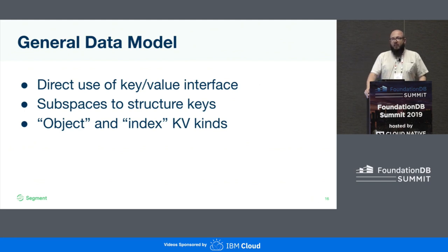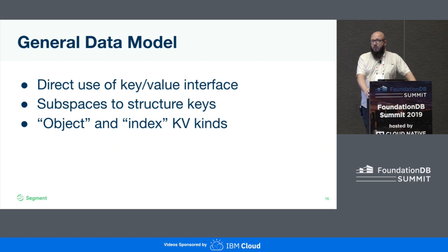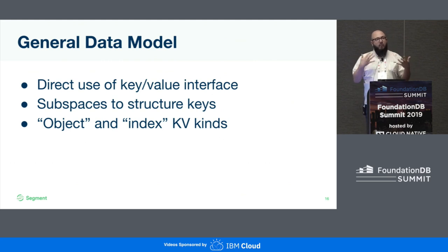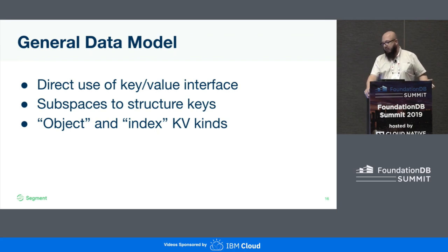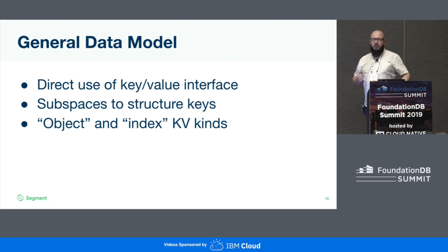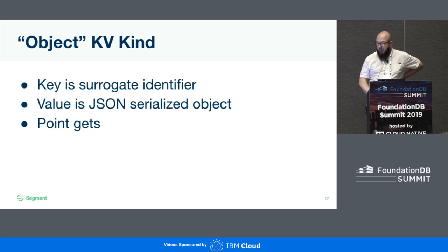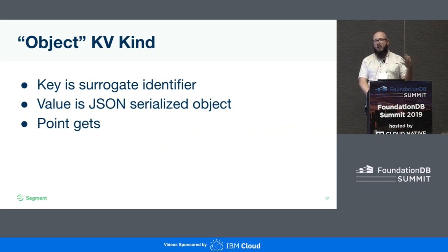Let's talk about what this actually looks like on top of FoundationDB. We don't use any real mapping layer. We decided to go directly to the KV store. Some of that is because all of our services are written in Go, and there isn't a ton of layer implementations for Go. So we directly use the KV interface. We use subspaces to structure our keys, and we have two types of KV pairs: objects, which are basically surrogate IDs as keys mapped to JSON-serialized objects, and indexes, which index those objects based on the fields in them. We do mostly point gets on these object KV types, and the value is a JSON-serialized object. A surrogate key is just a generated key that doesn't really mean anything outside of our system.